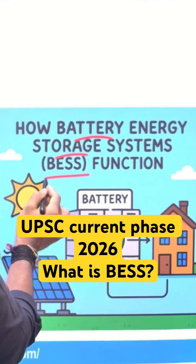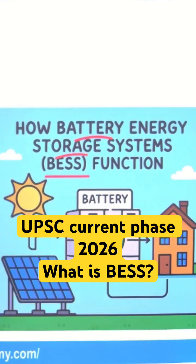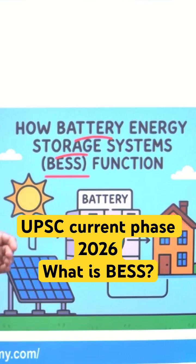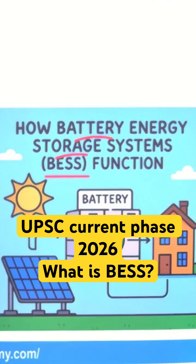We are using solar energy and renewable energy sources like solar energy and wind energy. The problem is that we cannot control the intensity of the Sun or the intensity of wind, which simply means we cannot control how much power we are going to produce at a particular point of time.